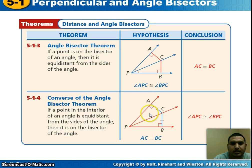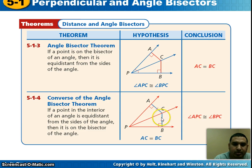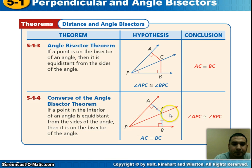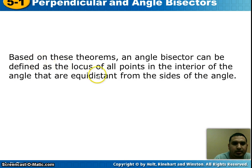The converse says that if a point is on the interior of an angle and you know that point is equidistant — meaning the same distance from C to A as from C to B — then that tells you that angle APC is congruent to angle BPC. Based on these theorems, an angle bisector can be defined as a locus of all points in the interior of the angle that are equidistant from the sides of the angle. Notice our two vocabulary words are being used to define angle bisector.